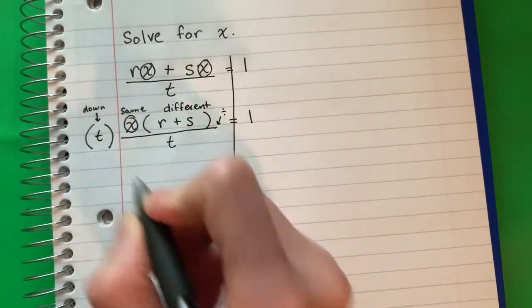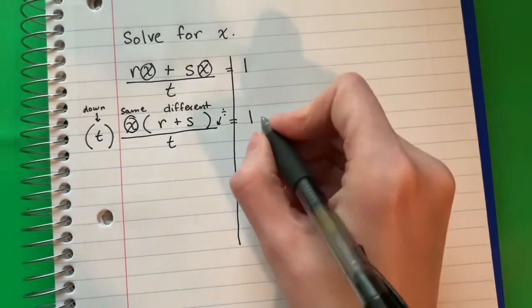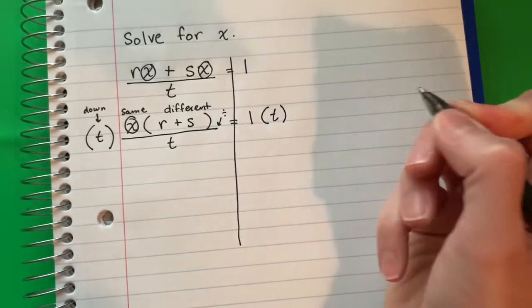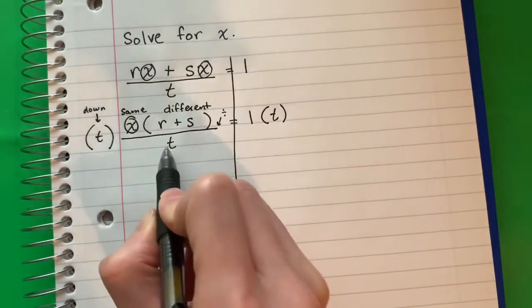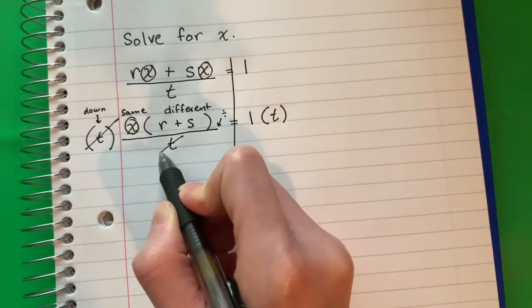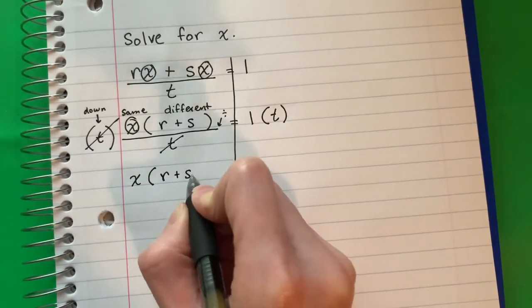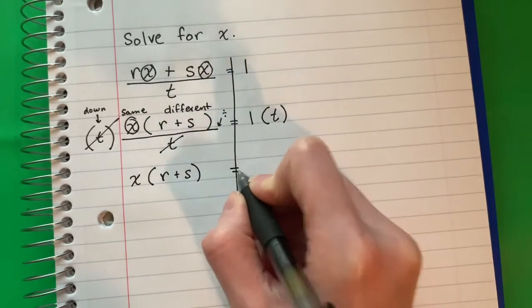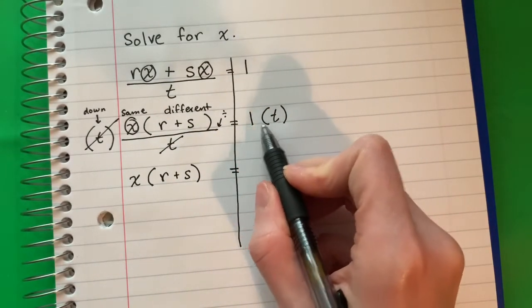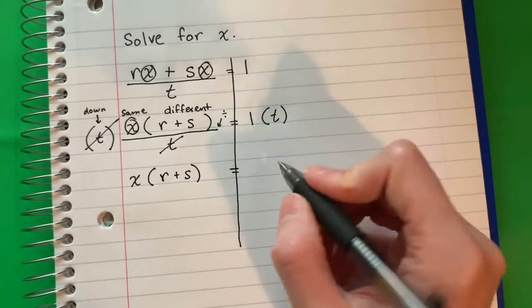I will put T here. And I will copy. Parenthesis T. Parenthesis. T divided by T cancels. And I'm going to copy down x times r plus s. Parenthesis. Equals 1 times T. Uno por T. It's 1 T.